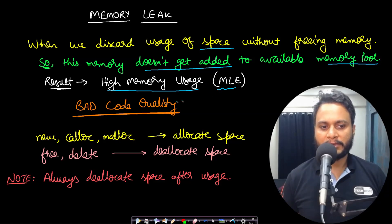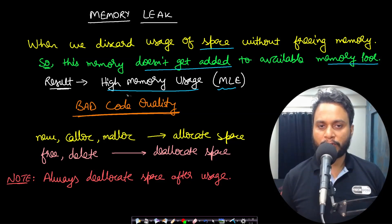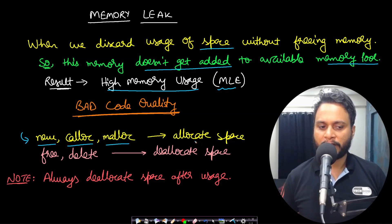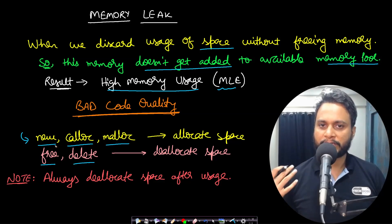Even if you don't get a memory limit exceeded error, the code quality is considered very poor and we should always avoid memory leaks. Whenever we need memory we do allocation using new, calloc, or malloc in C and C++, and when we want to de-allocate the space we use free and delete.